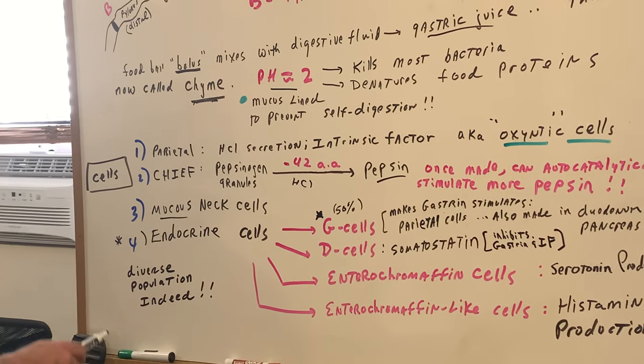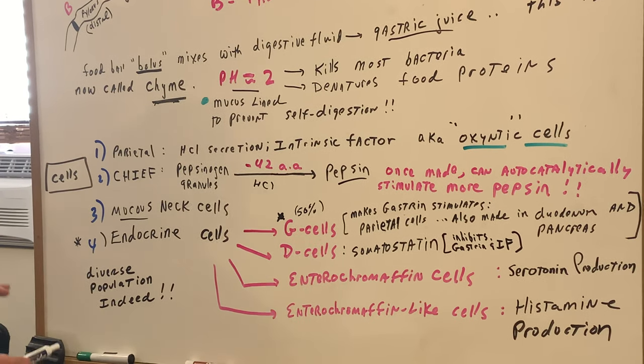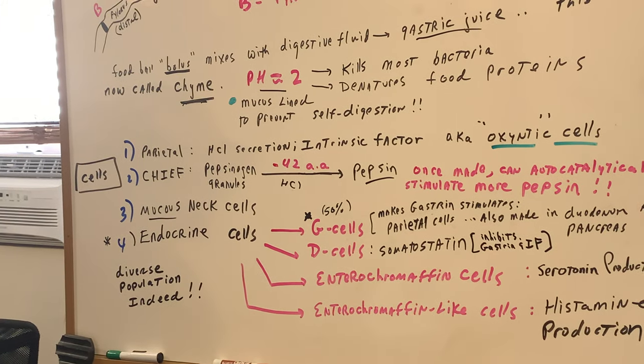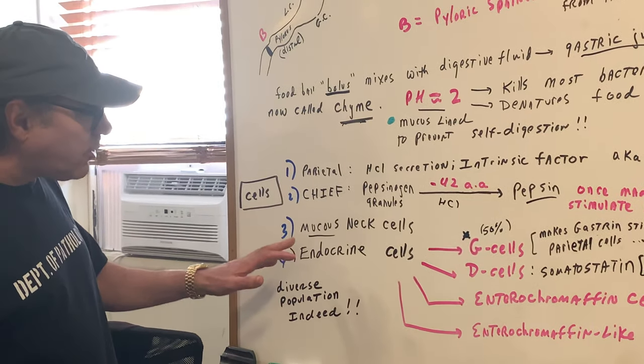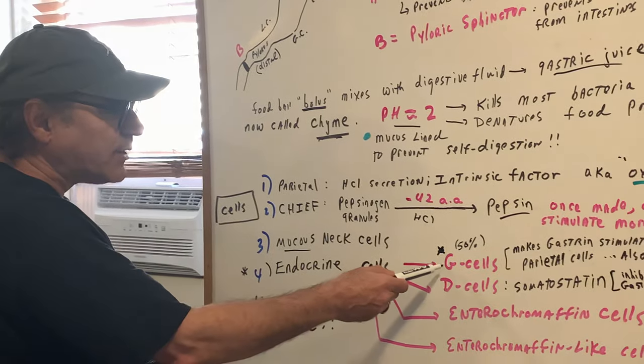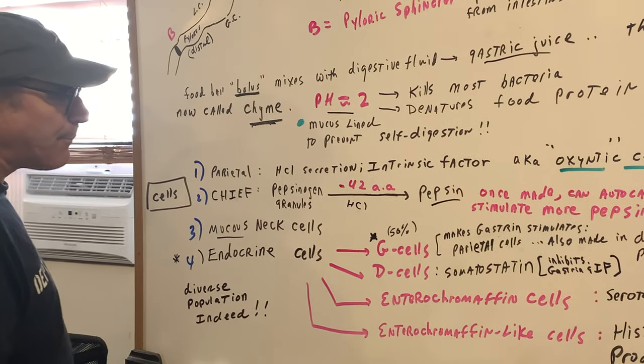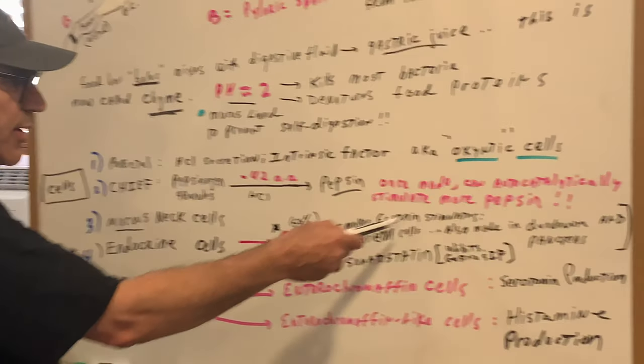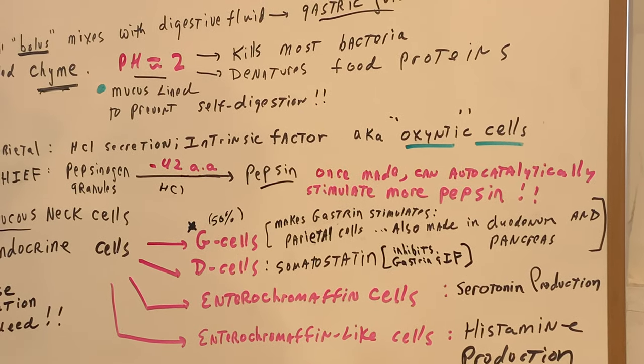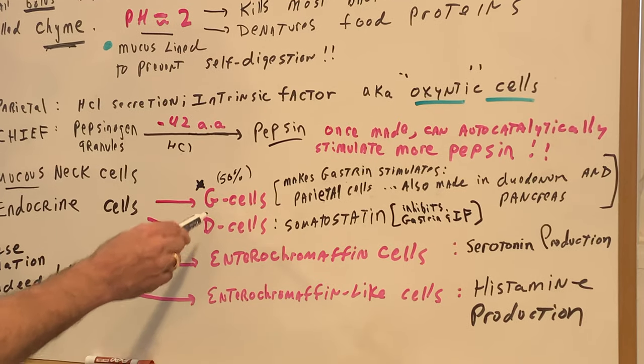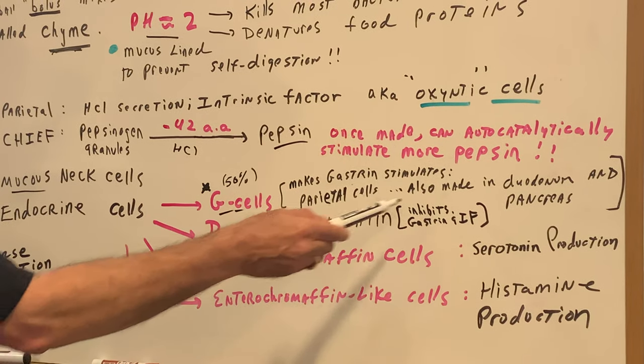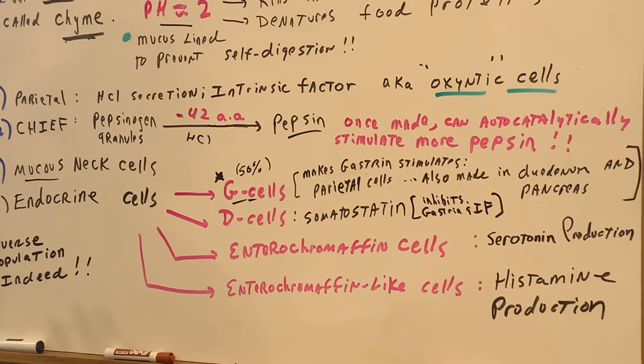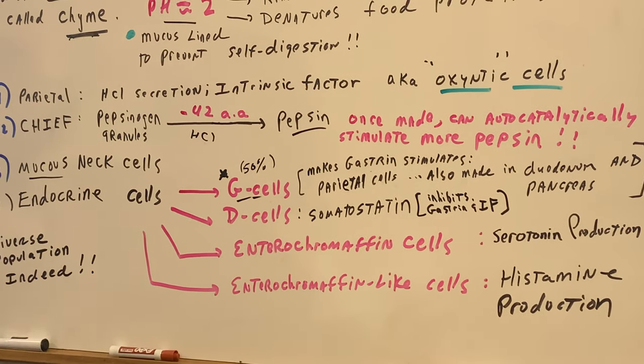Then the most diverse population that nobody ever gives any love to are the endocrine cells in the stomach. The endocrine cells include things like the G cells. Half of the population of the G cells make gastrin. Gastrin is what stimulates the parietal cells. But you've got to be careful when you're hearing about the G cells because they're also made in the duodenum as well as the pancreas. So there's a few places that make G cells.